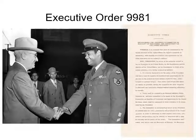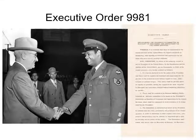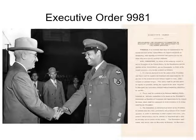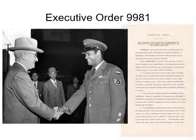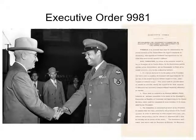Executive Order 9981 was signed by President Harry Truman on July 26, 1948. This executive order established the President's Committee on Equality of Treatment and Opportunity in the Armed Forces and said: 'It is hereby declared to be the policy of the President that there shall be equality of treatment and opportunity for all persons in the armed services without regard to race, color, religion, or national origin.'